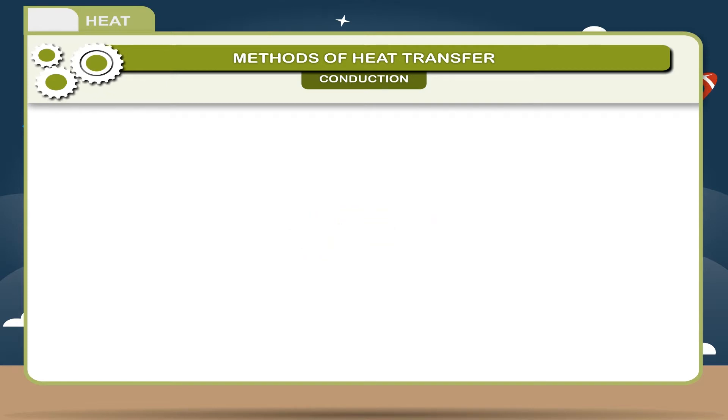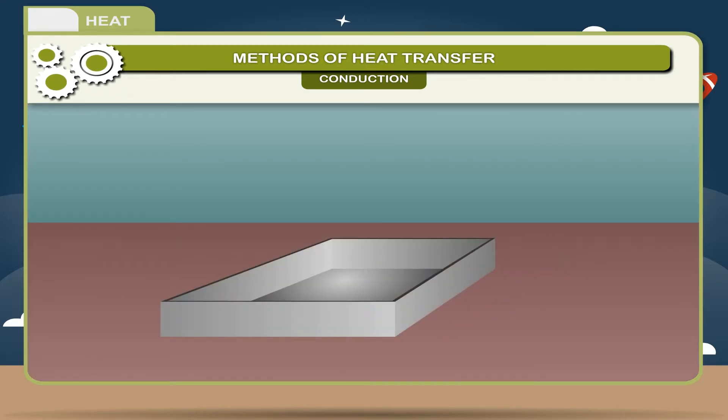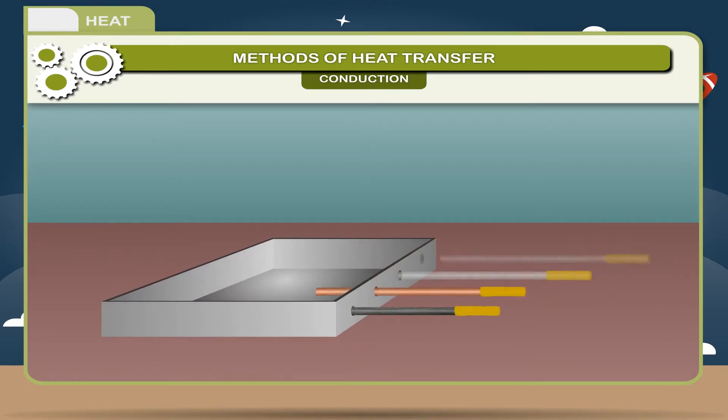Activity: Take four rods of different metals: iron, copper, aluminium and silver. The rods should be identical. Put equal amount of wax on one of their ends. Take a small metal container, make holes in the container and insert the rods inside the container so that the end having wax is outside as shown in the figure.